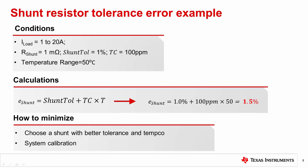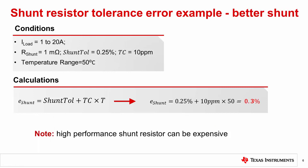How do we make it better and minimize this error? There are two possible ways to approach this. First, you can choose a high performance shunt, which means choosing a shunt with low initial tolerance and low temperature coefficient. Second, you may take advantage of system calibration. Let's take the same example from the previous slide, but substitute the shunt with one that is much more accurate. Here, the initial shunt tolerance is 0.25%, and the temperature coefficient is 10 ppm. As you can see, the resulting shunt error is only 0.3%.